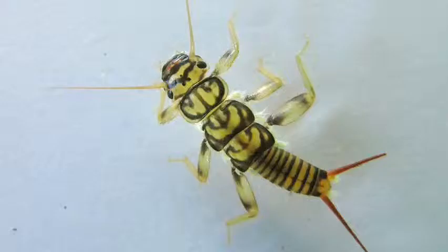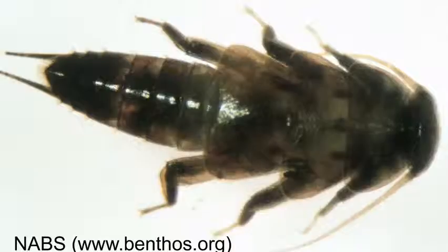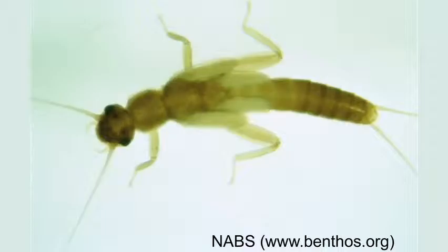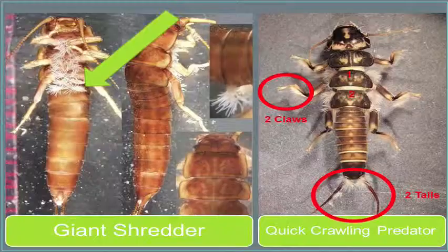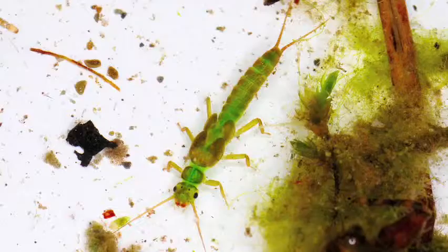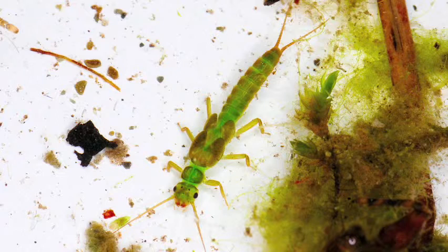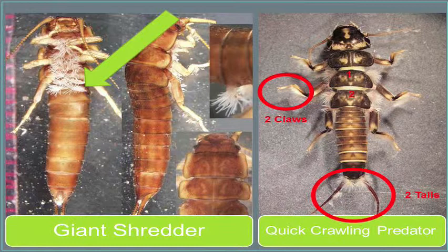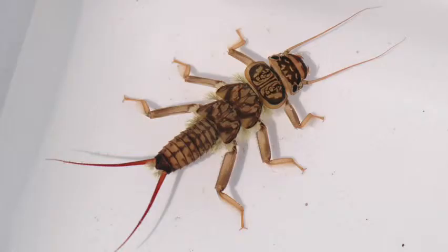The first group is stoneflies. Here we have the quick-crawling predator, the roach shredder, and the fragile detritivore. Here are some of these specimens preserved — here's a giant shredder, here's a quick-crawling predator. One of the main ways that we can tell these are stoneflies instead of mayflies is that stoneflies have their gills on the thorax, up underneath the legs of the organism. Stoneflies also have two tails, two sets of wing pads, and two claws on each foot.